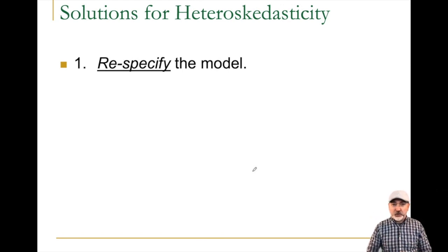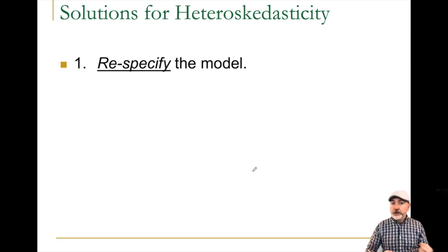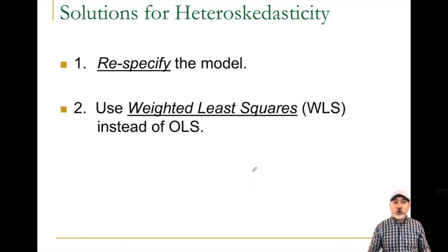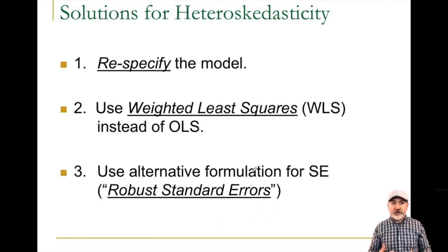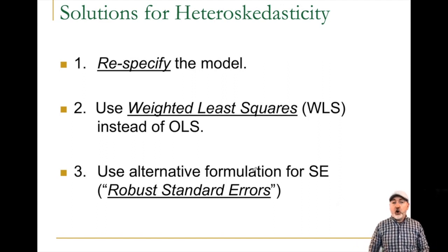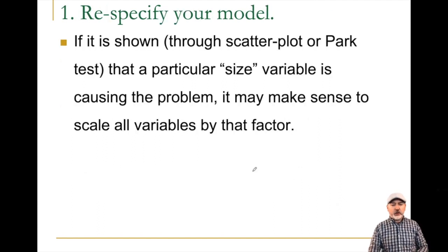Option number one is kind of a hail mary pass — it's worth a shot. Let's just make sure we've got the correct specification for our model. Some non-linear transformations can actually mitigate the heteroscedasticity problem. When that doesn't work, we go for the full weighted least squares transformation. And lastly, we can recalculate those variances and standard errors using a formula that is valid in the presence of heteroscedasticity — that's going to be our robust standard error option.